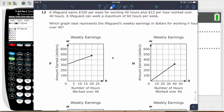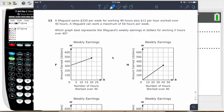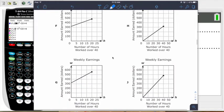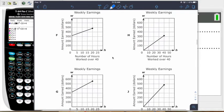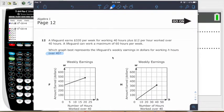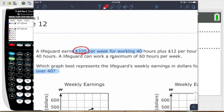Let's look at this. A lifeguard earns $320 per week for working 40 hours, and then plus 12 dollars per hour worked over 40 hours. A lifeguard can work a maximum of 60 hours per week. So after your 40-hour week happens, you make $320. So this is actually our initial amount.